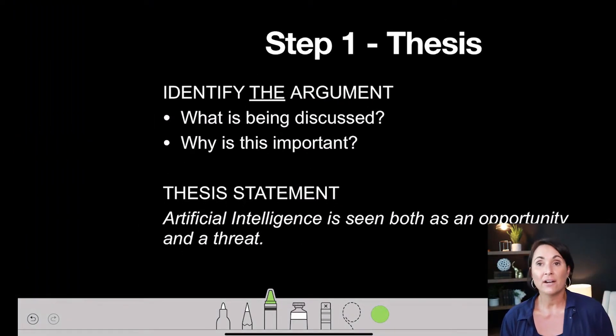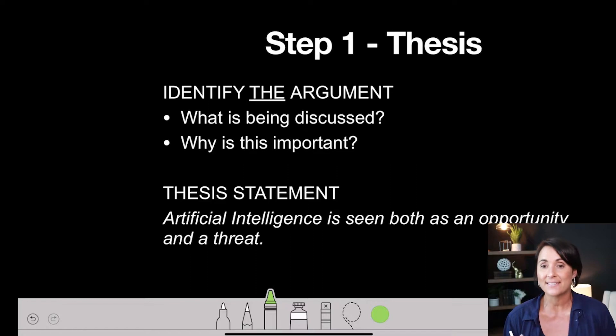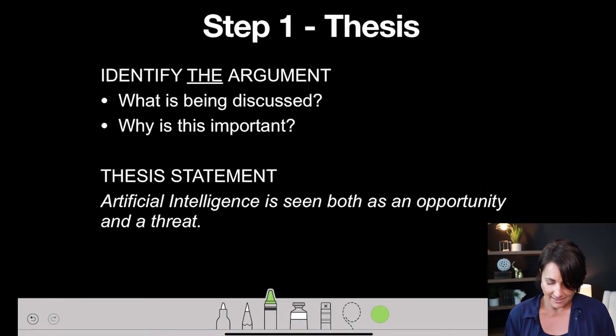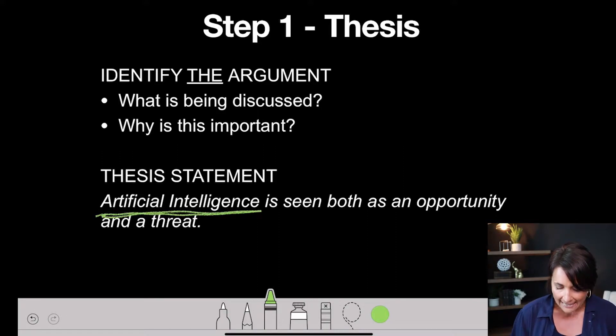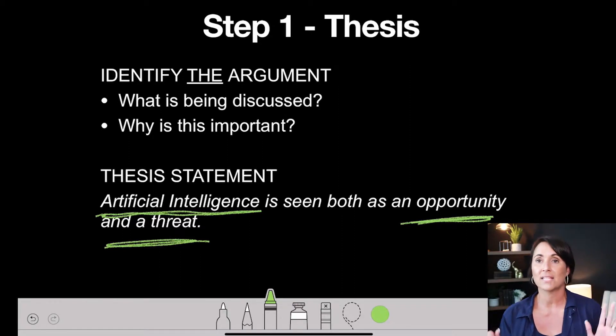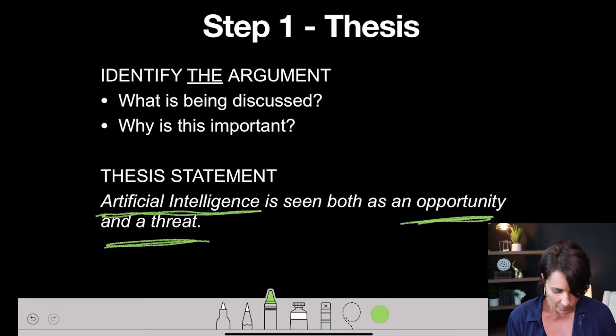Step one: define your thesis and identify the argument. With this, you can have a canned thesis statement ready to go for any source-based essay. For example: 'Artificial intelligence is seen both as an opportunity and as a threat.' If this were dress codes: 'Dress codes in school are seen as both discriminatory and necessary.' If it's cell phones in schools: 'Cell phone use in schools can be both beneficial and detrimental to the classroom.' All you do is take the topic and say it's a little of this and a little of that.